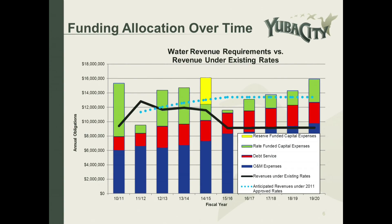When looking at water sales over the last few years, water sales make up a large portion of water revenue. Revenues were down 3.12% for fiscal year 13-14, 12.14% for fiscal year 14-15, and 19.32% for the first six months of fiscal year 15-16. This graph shows the blue as operating and maintenance expenses, red as debt service, green and yellow as projects. The black line represents revenue under existing rates, and the dotted blue line represents anticipated revenues under the approved 2011 rates. When we did the 2011 rate study, we weren't anticipating the drought, and the drought has had a significant impact on water revenues.